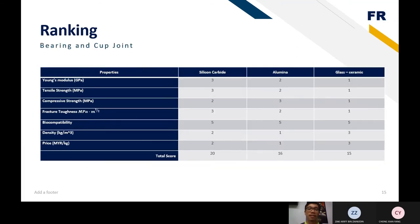For the ranking of bearings and cup joints, there are two materials that we selected. The silicon carbide will be used for the bearing because of its high fracture toughness and glass surface. And the glass ceramic will be used for cup joints because of its density and price, and because of its unique properties that is glass surface. And that's all from me for the material selection strategy part. Thank you.